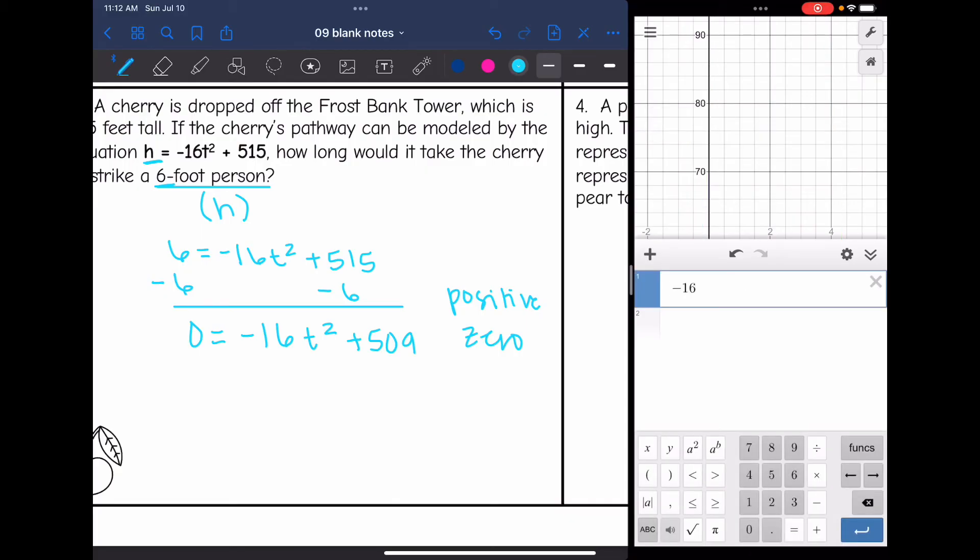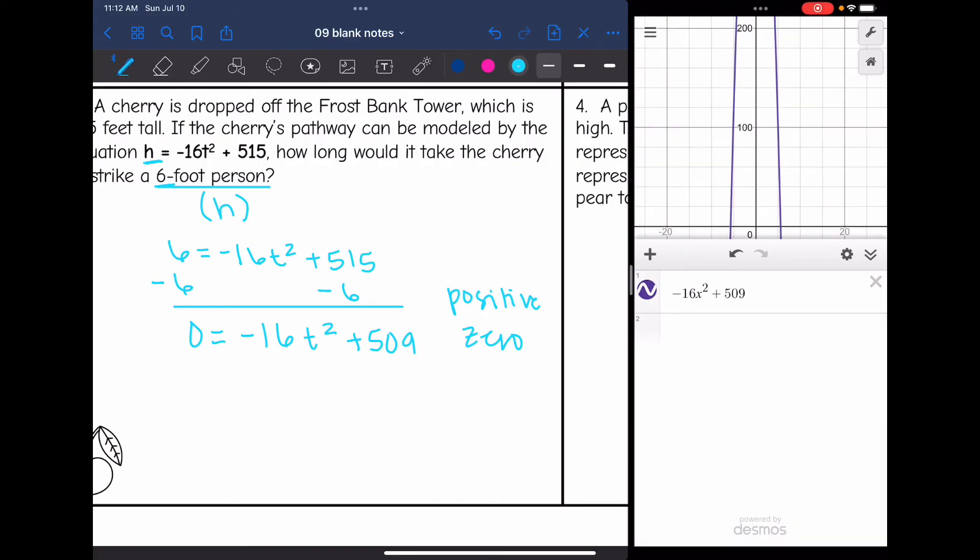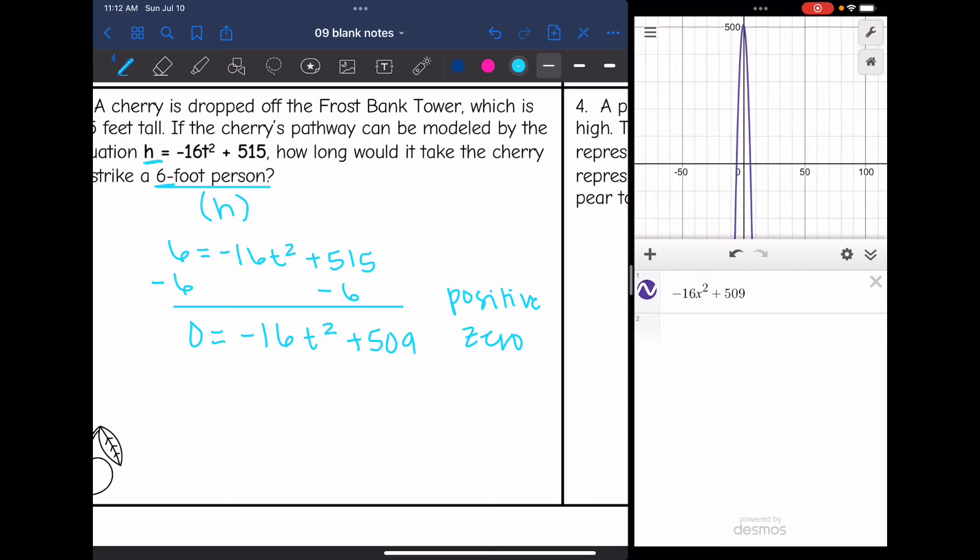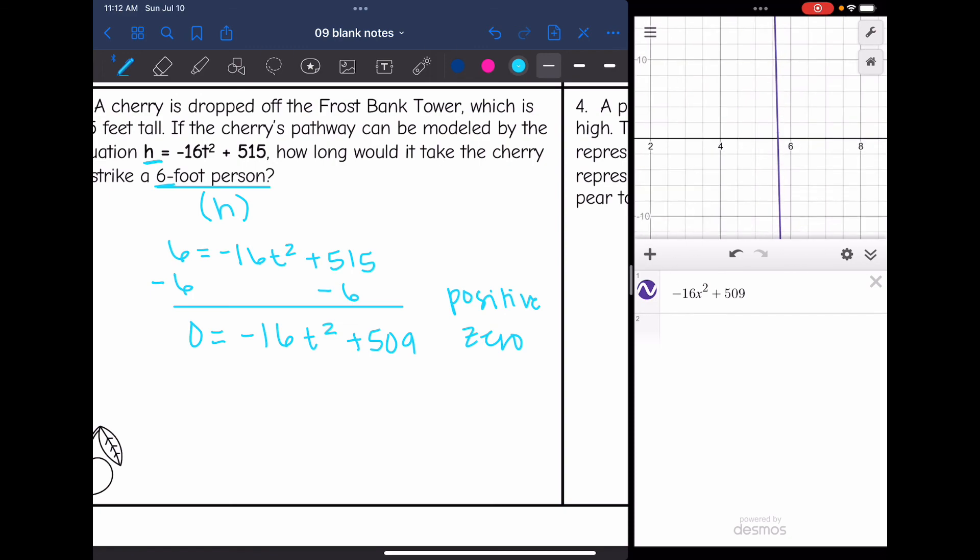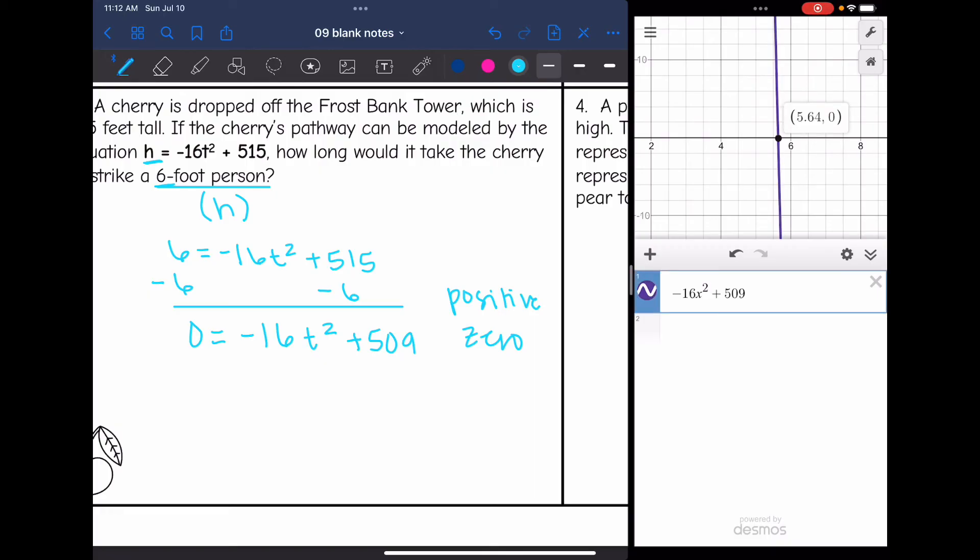Let me graph this one, -16x² + 509. I'm going to have to zoom way out to see the whole parabola. I'm wanting that positive zero right here. After we set the equation equal to 6 and found the positive zero, I get 5.64. So at 5.64 seconds is when the cherry would strike a 6-foot person.